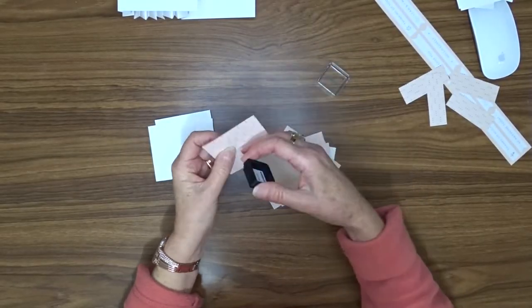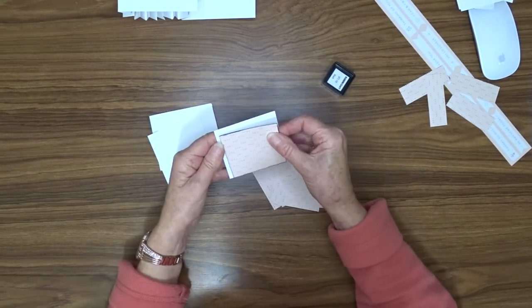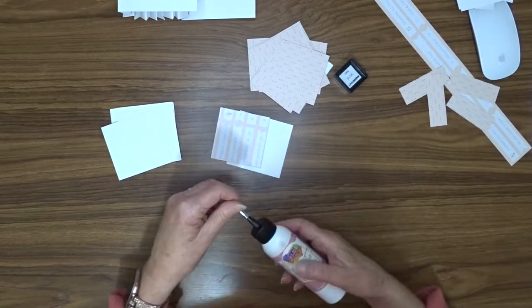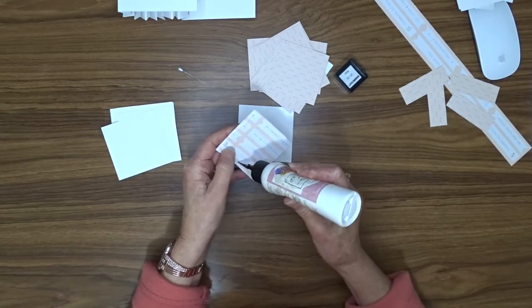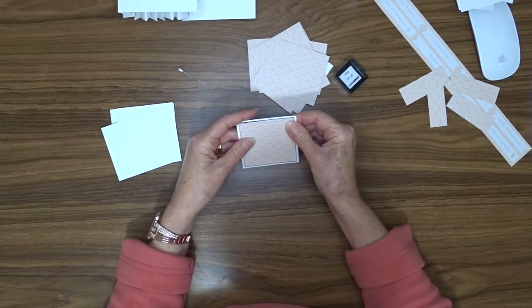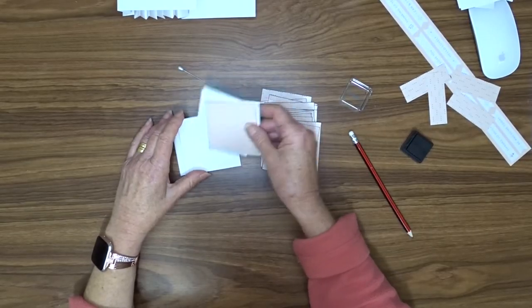I'm going to ink around the edge of each of my pattern paper squares with a black ink pad from KaiserCraft and then I'm going to use my liquid glue to attach each of those pattern paper squares to one of my white cardstock squares. I'm trying to centre it as best as possible.